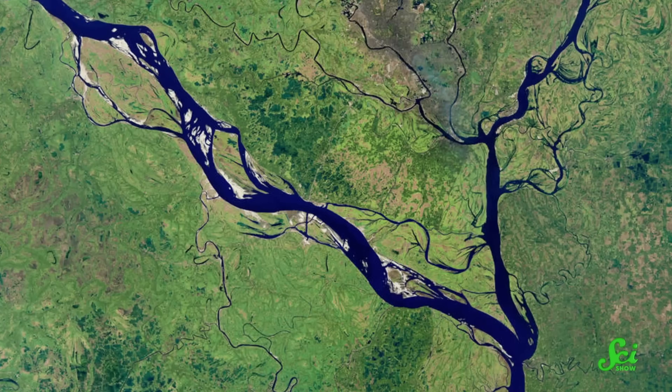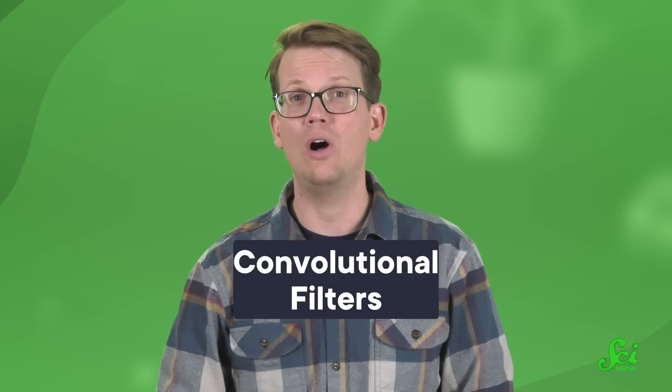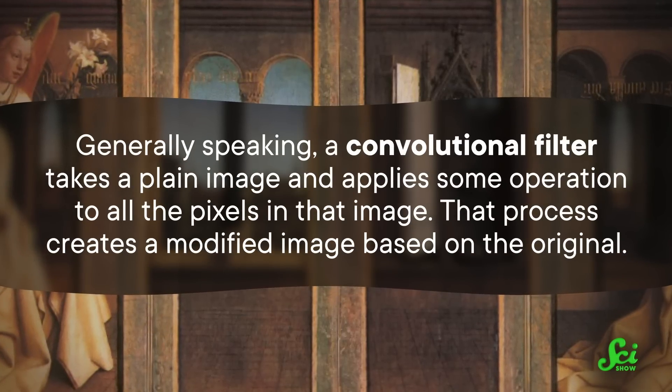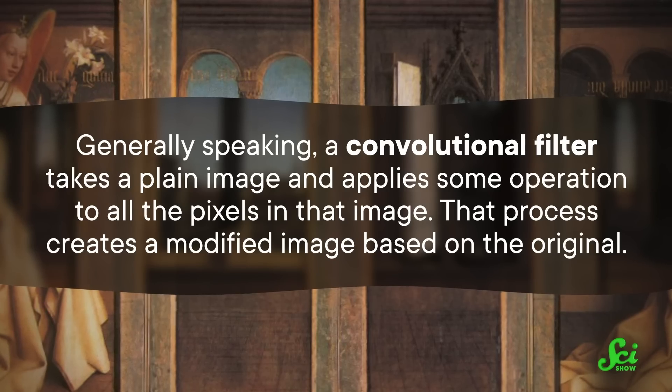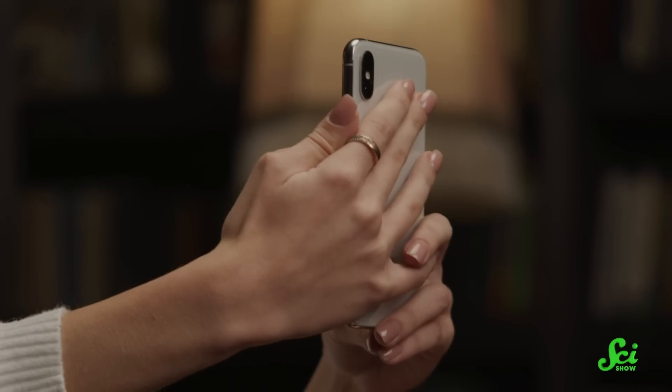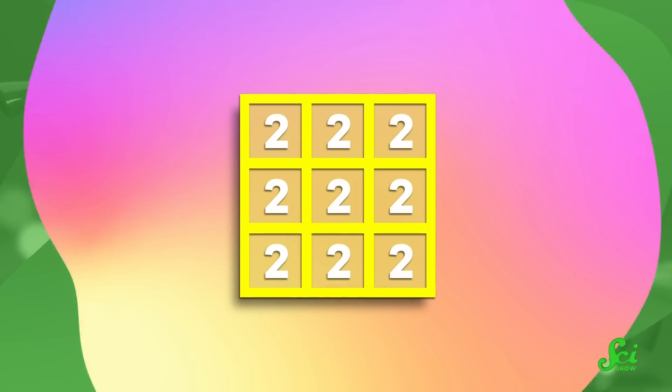Fortunately, they did not have to start from scratch here. There are lots of digital image processing algorithms out there that can pick out little branchy patterns that kind of look like cracks. Like blood vessels in medical images, or rivers and roads in satellite images. One way to do this is by using something called convolutional filters. Generally speaking, a convolutional filter takes a plain image and applies some operation to all the pixels in that image. That process creates a modified image based on the original. If you've ever used an Instagram filter before, you've probably used one of these.